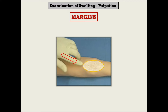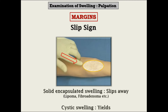In some cases, swellings are highly mobile, so whenever you try to feel the margin, they just slip away from your fingers. This is called the slip sign and it is usually seen in solid encapsulated swellings. Very common examples are lipoma and fibroadenoma of the breast — in fact, fibroadenoma is called breast mouse. A cystic swelling like a sebaceous cyst or dermoid cyst will not slip away, but a solid mass like a lipoma will slip away from your finger.